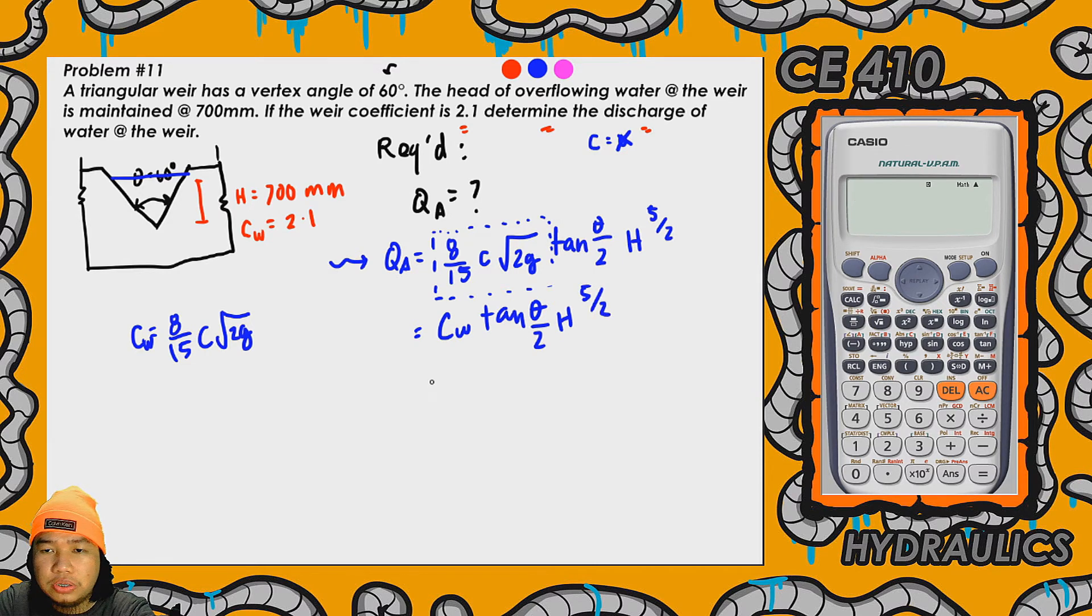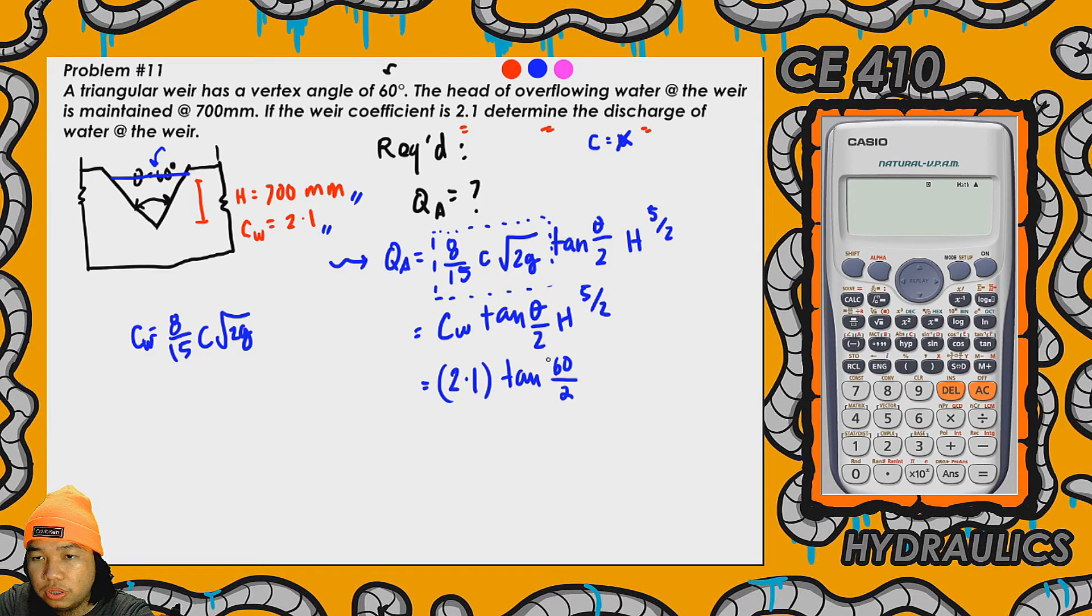So ayun, pwede na natin i-plug in yung mga given. Given naman ang C sub w o yung weir coefficient, given naman ang head which is 700 millimeters, at given din syempre yung vertex angle at 60 degrees. So that is 2.1 or C sub w times tangent of 60 over 2 degrees.